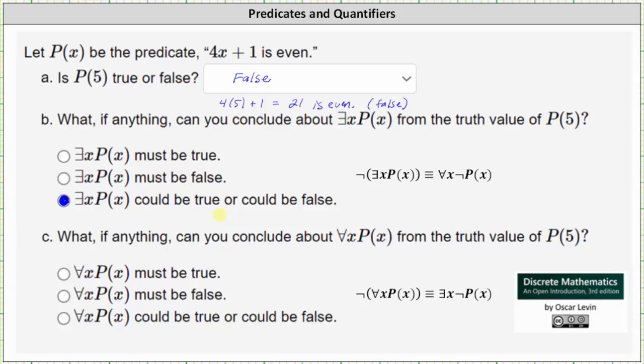And then for part C: what, if anything, can you conclude about for every x P of x is true, or for every x 4x plus 1 is even, from the truth value of P of 5? Well, again, because P of 5 is false, it follows that for every x P of x is true would also be false, or for every x 4x plus 1 is even is false. And therefore we select the second option: for every x P of x must be false.